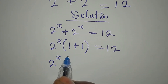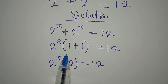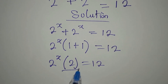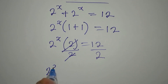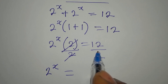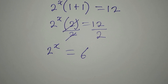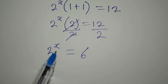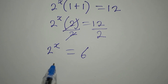So 2^x multiplied by 2 equals 12, because 1 plus 1 is 2. We divide both sides by 2 — remember, doing the same thing on both sides does not change the equation. So 2^x equals 12 divided by 2, which is 6. Our next target is to find the value of x, and we cannot express 6 in exponential form directly.